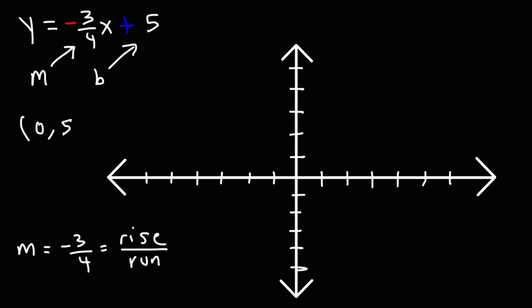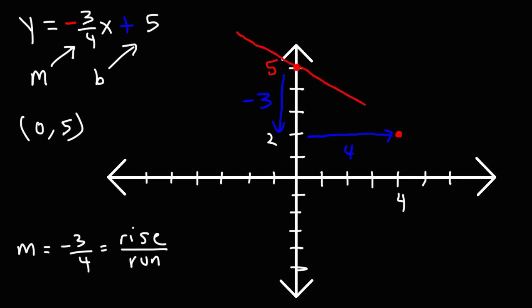So we have the point 0, 5. The y-intercept is the y-value of the graph when x is 0. Let's plot the y-intercept first at 0, 5. Now we use the slope to get the next point. The rise is negative 3, which means we go down 3 units, and the run is 4, so we travel 4 units to the right. We get the point 4, 2. Now all we need to do is connect the two points with a straight line. So that's my rough sketch of this particular line.